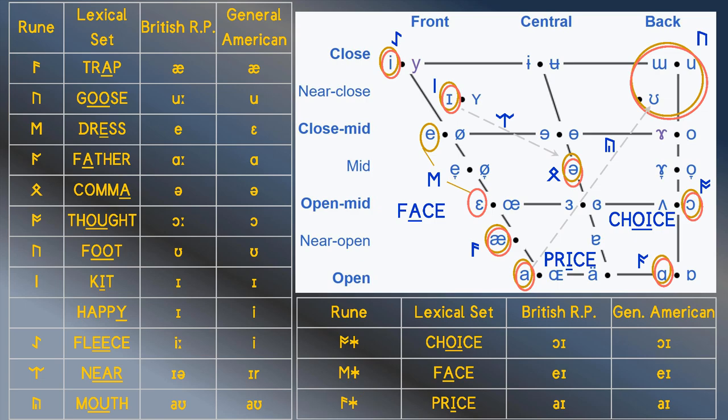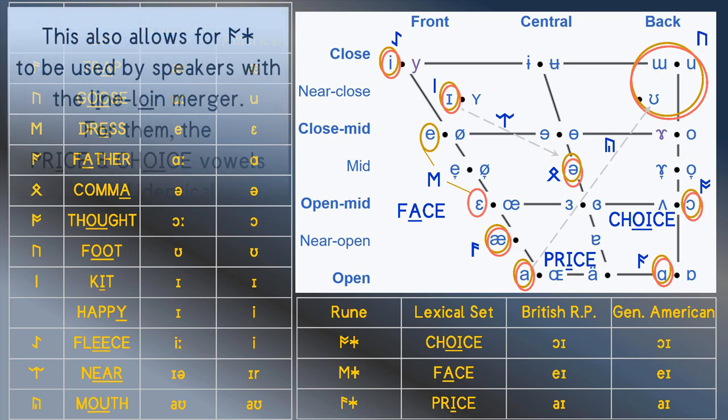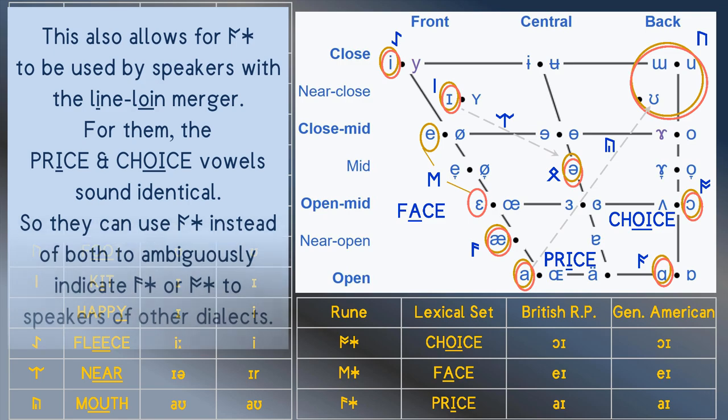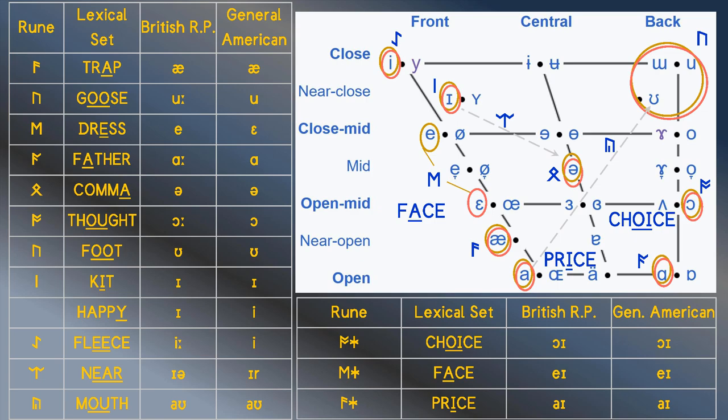RuneSchool, if you're watching, well done on that one, mate. This screen is now completely out of space. So, what do you think of these decisions so far? Are there any you disagree with? Tell us what you think in the comments. For the next video, we'll arrange these vowels in a new table so we can identify a rune for the happy vowel and add runes for the other remaining lexical sets. Thanks for watching!